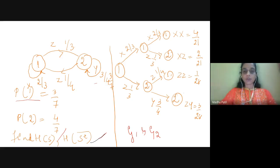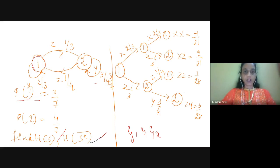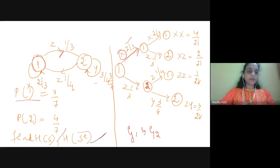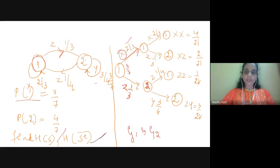To find g1 and g2, we will first draw the tree diagram. Initially, when the source is in state 1, it remains in state 1 by emitting symbol x with probability 2/3. Next, it jumps to state 2, emitting symbol z with probability 1/3. The probability of state 1 is 3/7. So the symbols emitted at the end of the first symbol interval are x and z.